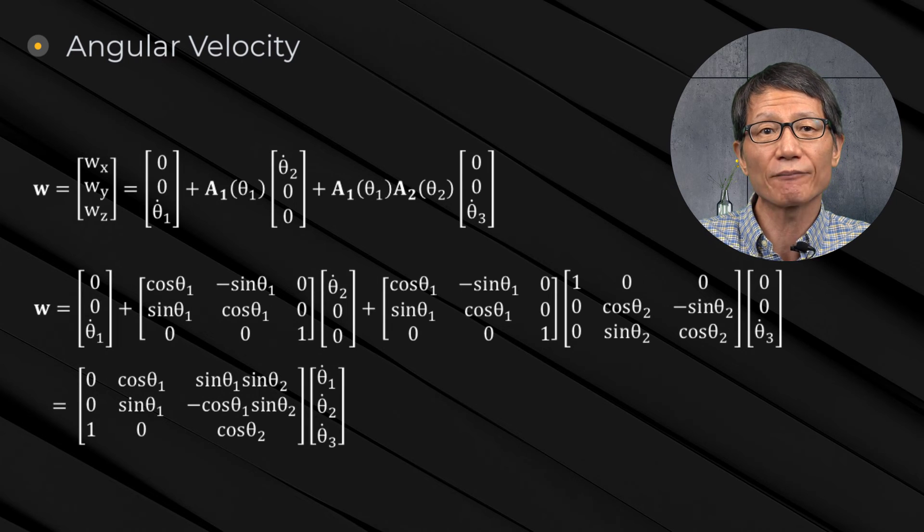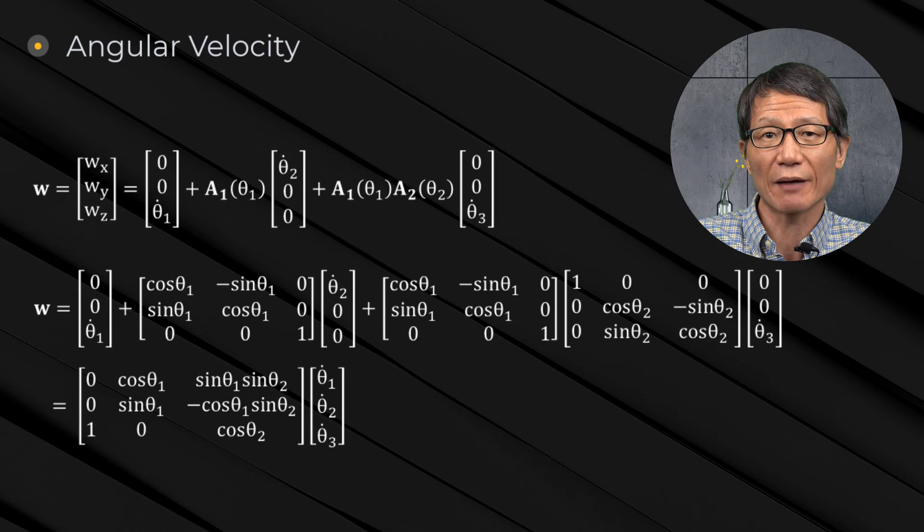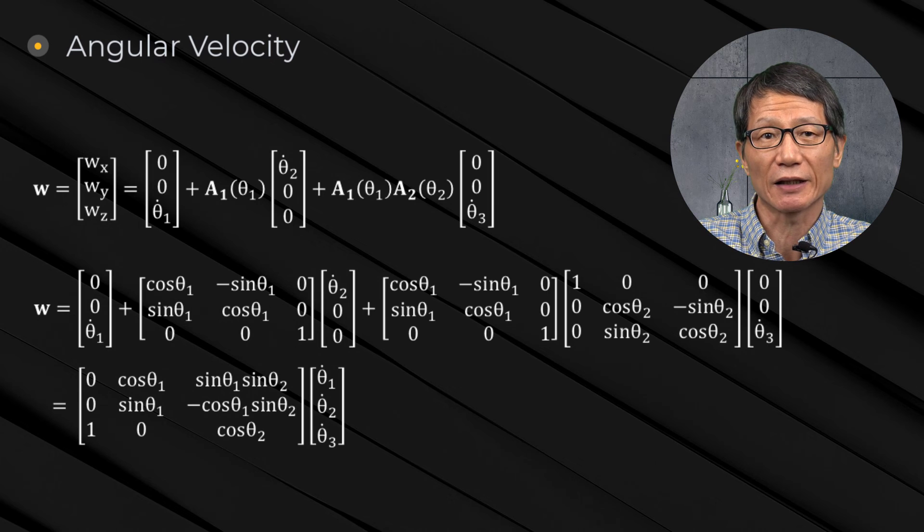With a given time derivative of Euler angle, the angular velocity can always be obtained by this equation. The time derivative of Euler angle can be obtained by inverting the matrix.